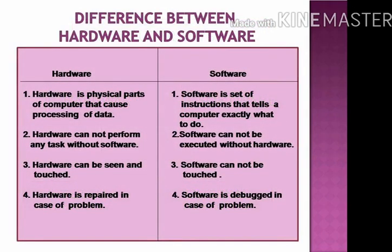The next slide contains the difference between hardware and software. Hardware is the physical parts of a computer that cause processing of data, but software is a set of instructions that tells a computer exactly what to do. Hardware cannot perform any task without software, but software cannot execute without hardware. Hardware can be seen and touched, but software cannot be touched. Hardware is repaired in case of a problem, but software is debugged in case of a problem.